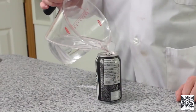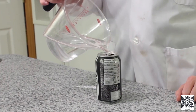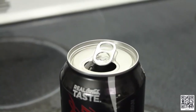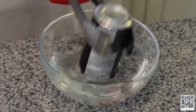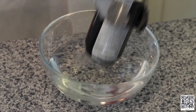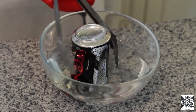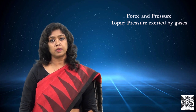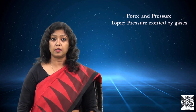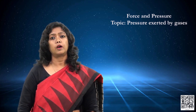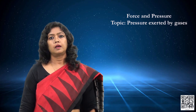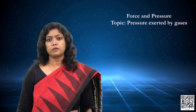The existence of atmospheric pressure can be demonstrated by many activities. In one such activity, I take a small can and boil a small quantity of water in it. Then I pour cold water over the can, and we see that the can collapses and gets crumbled. Why does the shape of the can change? The can changes its shape because of the atmospheric pressure acting on it. Try to find out the reason for this phenomenon.